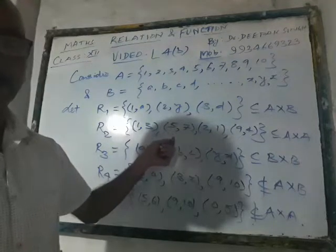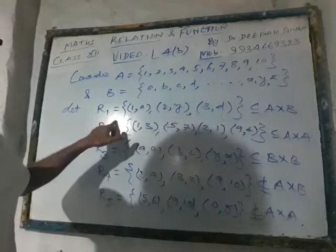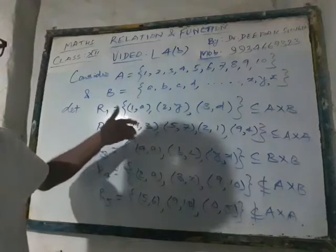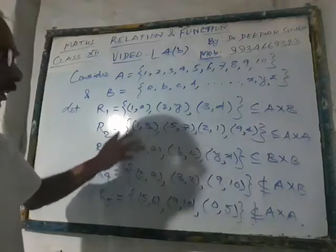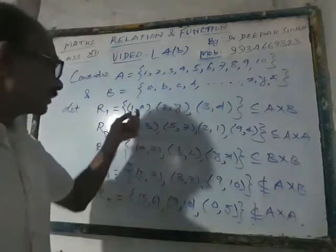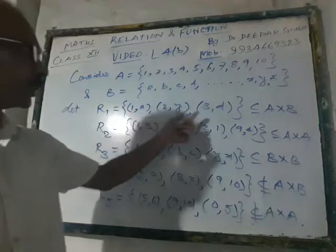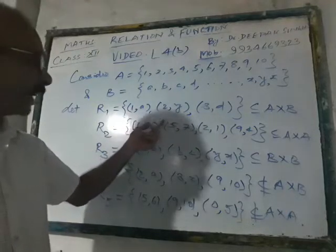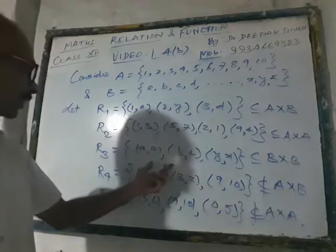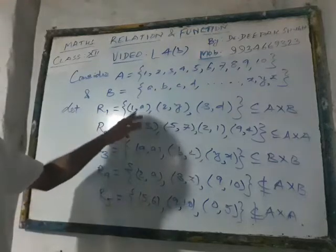In fact, there is no need to write A cross B to determine whether a given set is a relation from A to B, or A to A, or B to B. Suppose we want to see whether sets R1 through R5 are relations from A to B or A to A or not. For that, what is to be checked? Just go on watching carefully the elements of the given set. We start right from R1 — R1 has three elements, R2 has four elements, R3, R4, and R5 each have three elements.